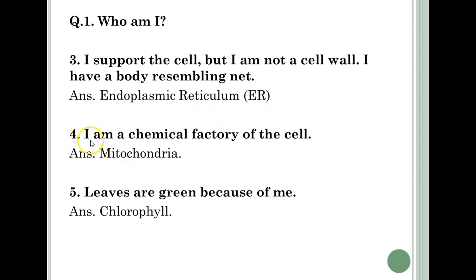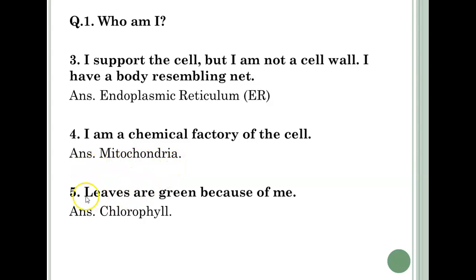Fourth question — I am a chemical factory of the cell. Answer: Mitochondria. Fifth question — Leaves are green because of me. Answer: Chlorophyll.